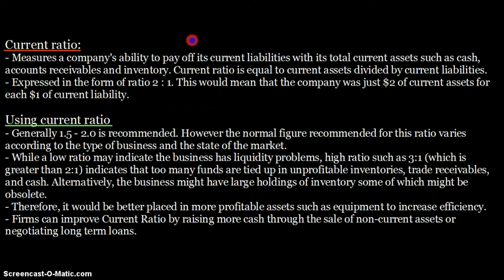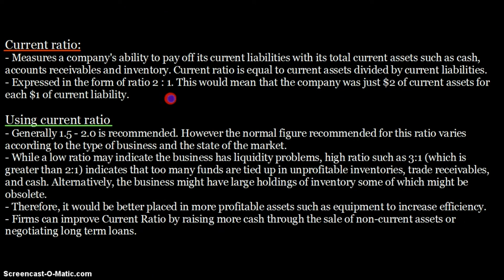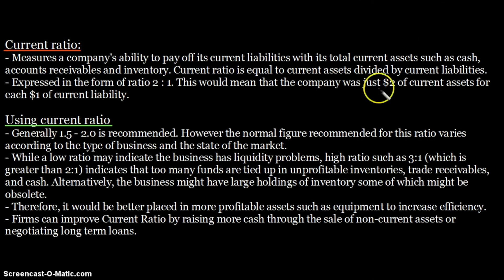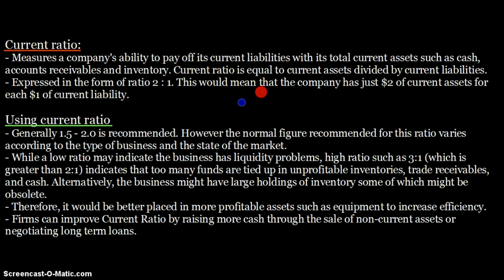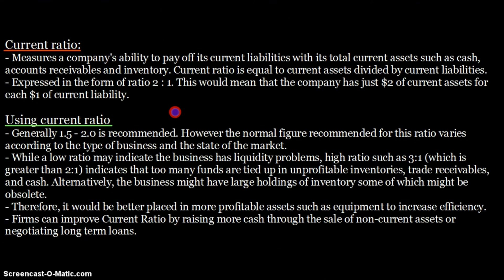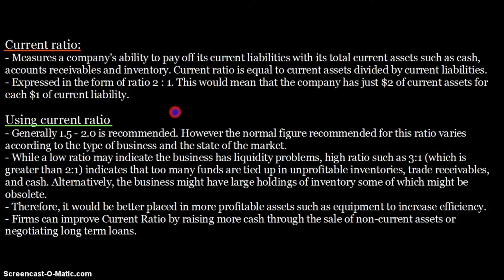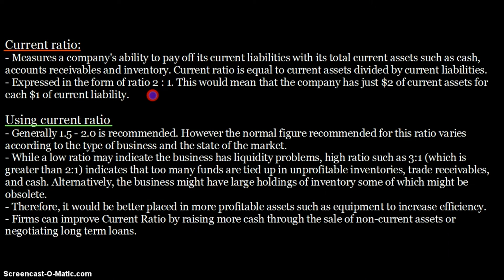The current ratio is expressed in the form of a ratio. For example, if current assets are 200 and current liabilities are 100, then 200 divided by 100 equals 2, expressed as 2:1. This means the company has 2 dollars of current assets for each 1 dollar of current liability — a pretty good ratio, indicating the business is sufficiently liquid and has enough assets to cover its liabilities.